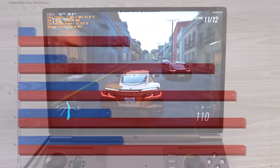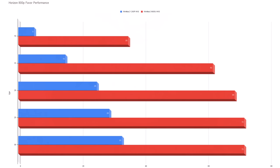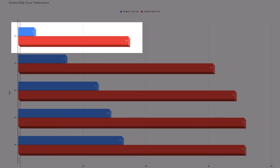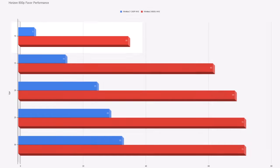Next up is Horizon Zero Dawn at 800p with the 'Favor Performance' preset. At 10W there's a 7x increase in performance between the two platforms. At 15W it's a 4x increase, at 20W it's just over double, and at 25W it's still about double. This shows that benchmarks focusing only on 25 or 30W tell a big story, but not the same story as forced low TDP, where the difference is absolutely gigantic.